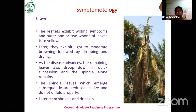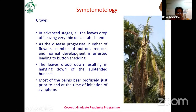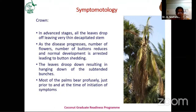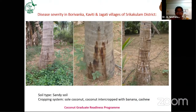Finally, the stem shrivels and dries up. In advanced stages, you can see a very thin, decapitated stem because of the removal of dead leaves and no new root production. You can see a stem as thin as a pencil tip. These are the symptoms showing oozing at the basal stem portion that slowly moves upward, observed for disease severity in Borivanka, Kaviti, and Jagati villages of Srikakulam district.